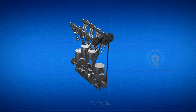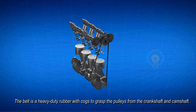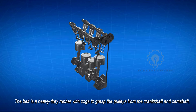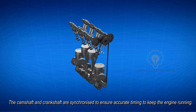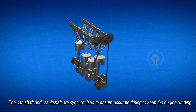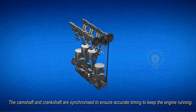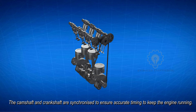The timing belt is a heavy-duty rubber belt with cogs, to grasp the pulleys from the crankshaft and camshaft. The camshaft and crankshaft are synchronized to ensure accurate timing, in order to keep the engine running properly.